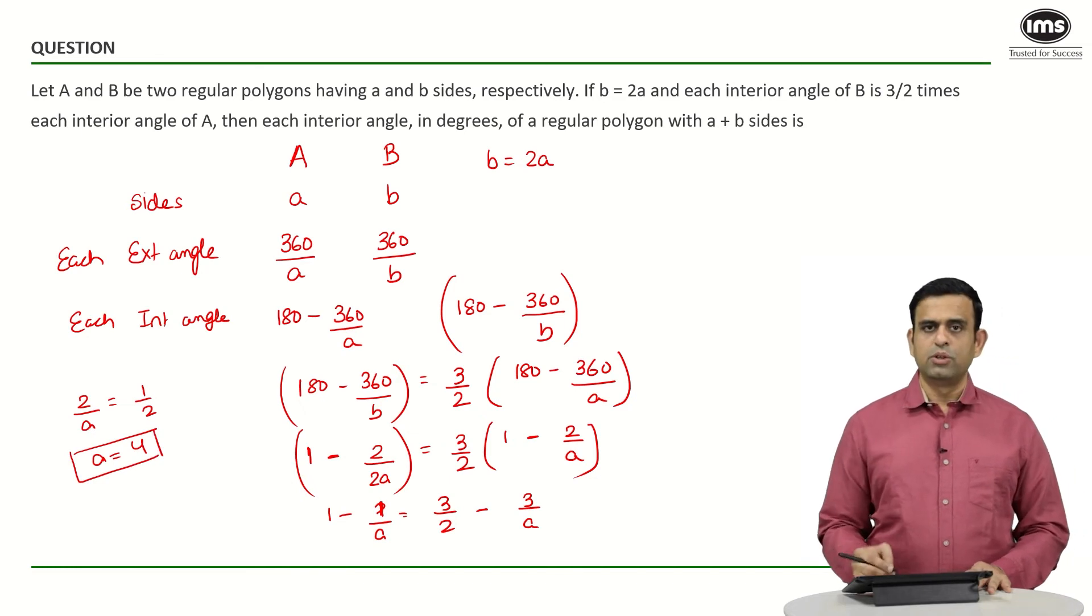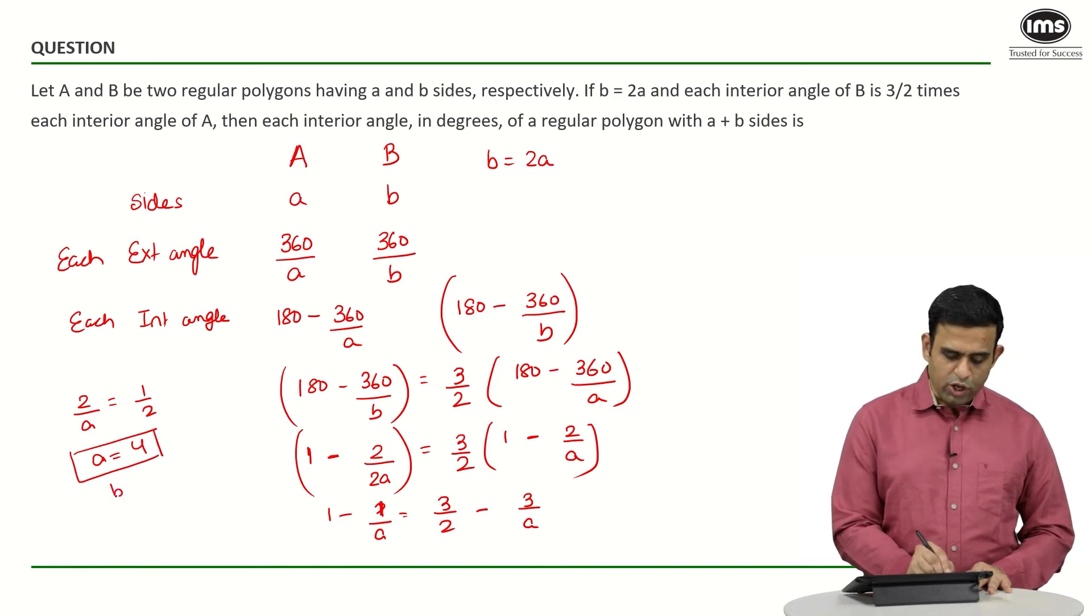If small a equals 4, then small b will be twice of small a, which is 8.